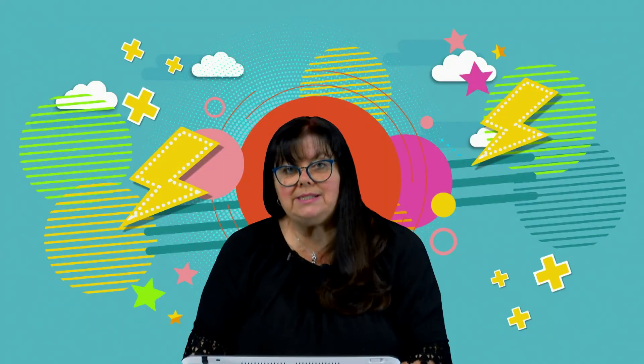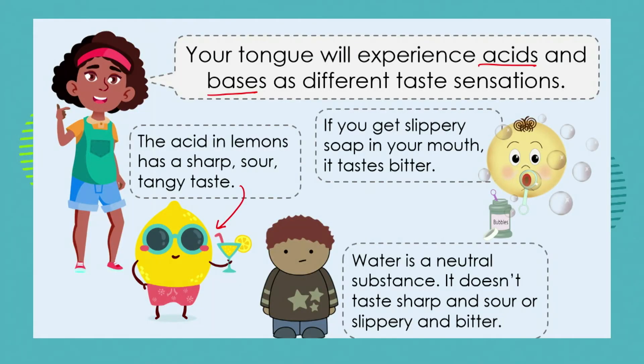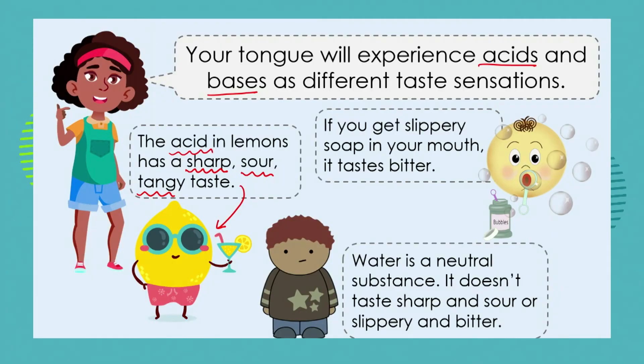Your tongue will experience acids and bases as different taste sensations. Looking at our lemon character, who symbolizes acids: acids have a very sharp, sour, or tangy taste. If you imagine biting into a lemon, you may even find that your salivary glands are producing saliva and you're almost anticipating the sharpness, the tang, the sourness of the lemon. So any acid, if we were to taste it, would have a sharp, sour, or tangy zap on our tongues. But remember, we're not going to be tasting acids that are dangerous — only acids that are naturally in our food substances.